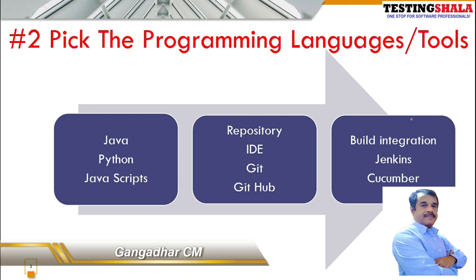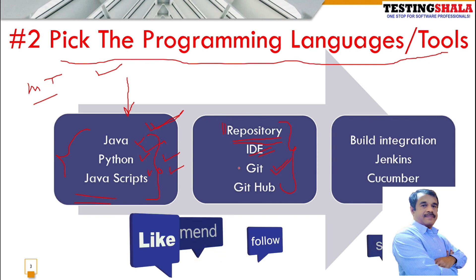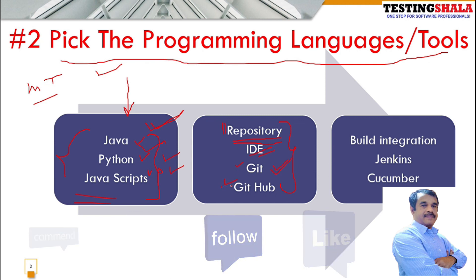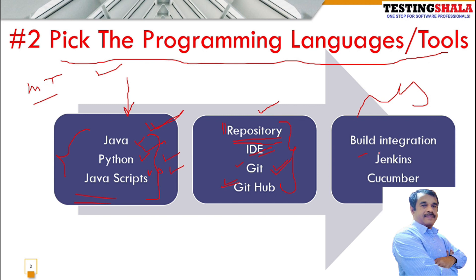The second thing is that in order to become a test automation engineer, you should learn a programming language. Most of the time, Java, Python, or JavaScript will be used — these are very crucial and important programming languages normally used in most test automation tools. Along with that, you should also know how to operate a central repository where your code and data will be stored, using Git technology or GitHub.